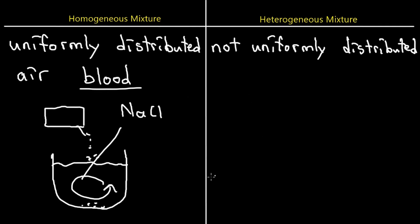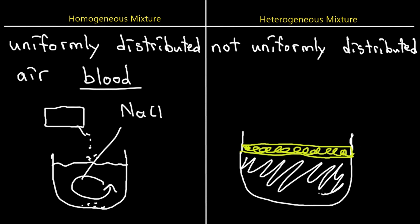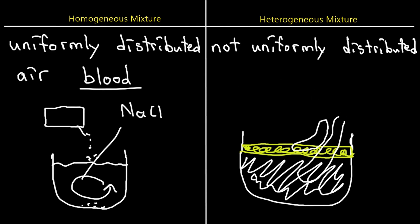An example of a heterogeneous mixture is oil and water. The oil flows on top of the water because it has a lower density, so if you take a scoop from the top you only get oil, but a scoop from the bottom gives you some oil and some water. It's not uniformly distributed — some parts have more oil, some have more water.